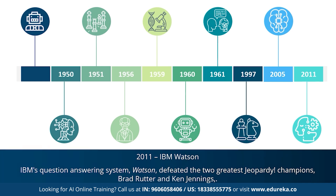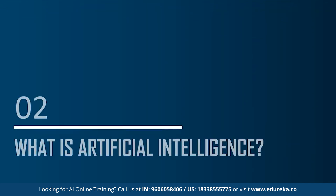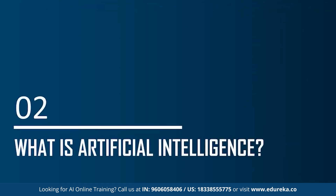So that was a brief history of AI. Since the emergence of artificial intelligence in the 1950s, we have seen an exponential growth in its potential. AI covers domains such as machine learning, deep learning, neural networks, natural language processing, knowledge base, expert systems, and so on. Now let's move on and understand what exactly artificial intelligence is.